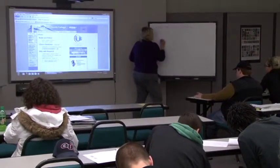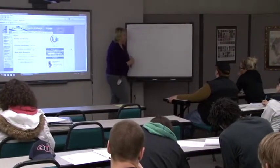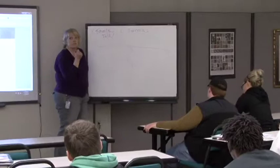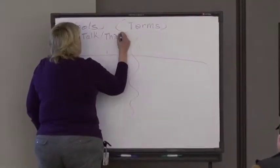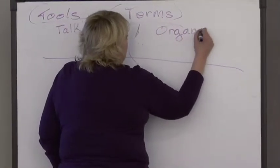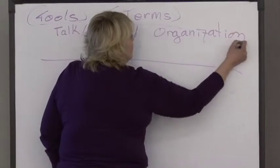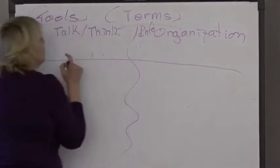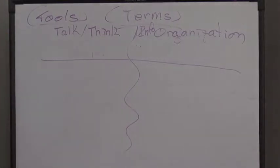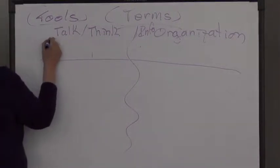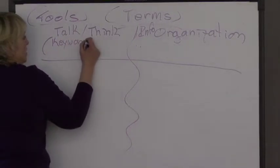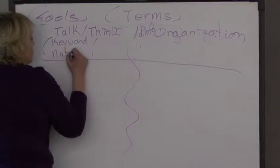Unfortunately there's this huge invisible barrier between the way that we talk and think and the way that information is organized — totally differently. The talk-and-think column is the same thing as keyword or natural language, while the formal side is how information is really organized.